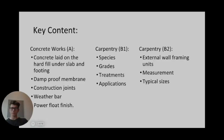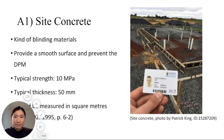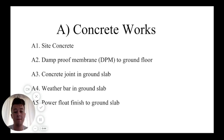My name is Patrick King and I did part of the concrete works group. In the concrete works, we looked at five parts: A1 site concrete, A2 damp proof membrane to ground floor, A3 concrete joint in ground slab, A4 weather bar in ground slab, and A5 power float finish to ground slab.